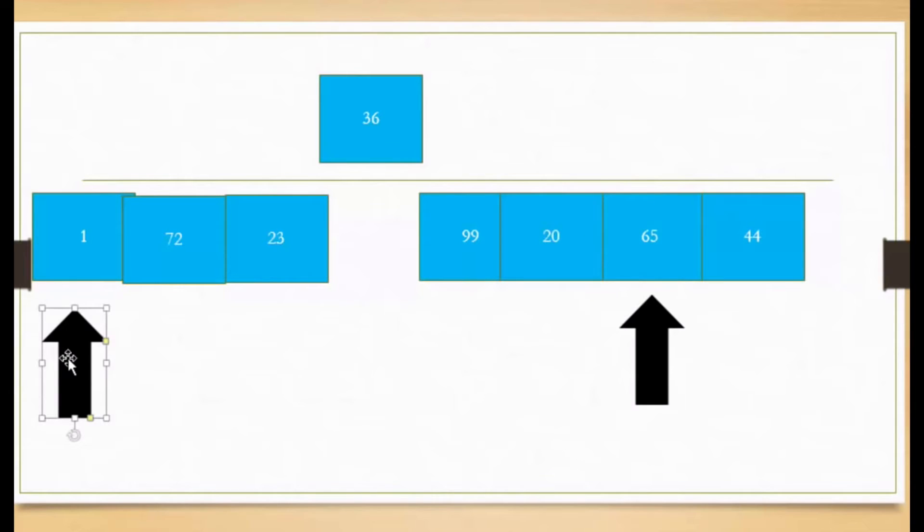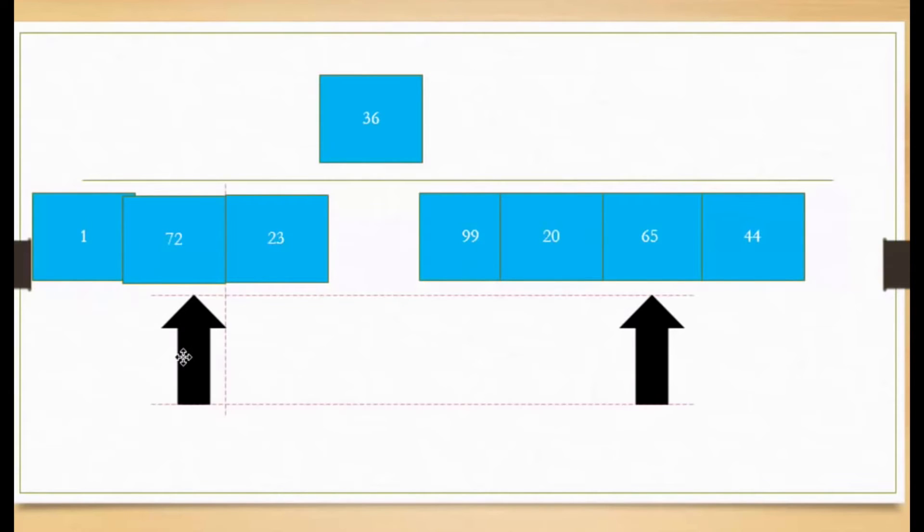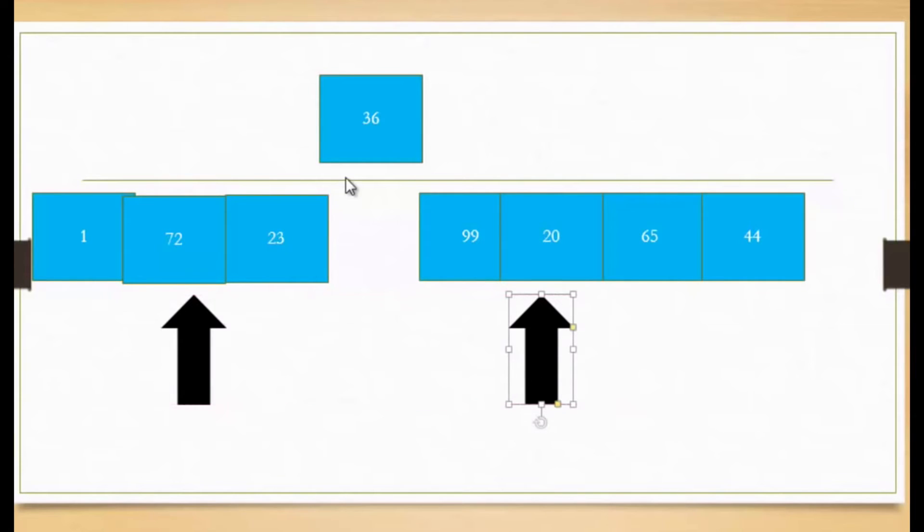Now I'm going to advance both of the arrows to the next element. And I'm going to look at 72, which is greater than 36, and 20, which is less than 36. So then, again, those can be swapped. And you can see these three elements are already sorted.